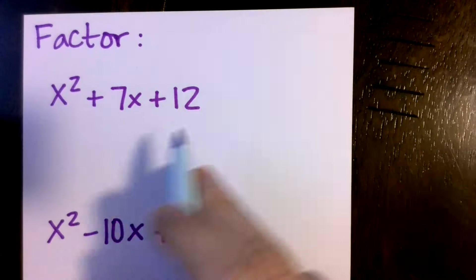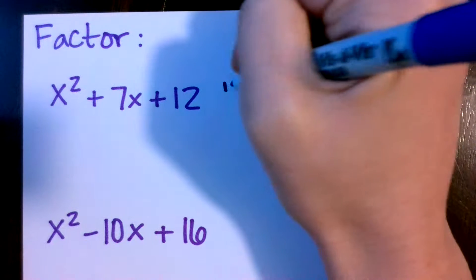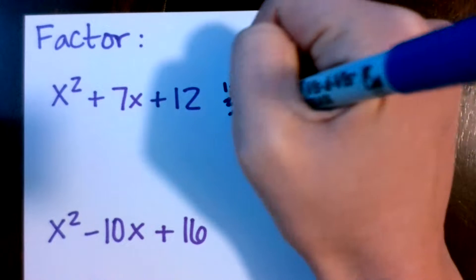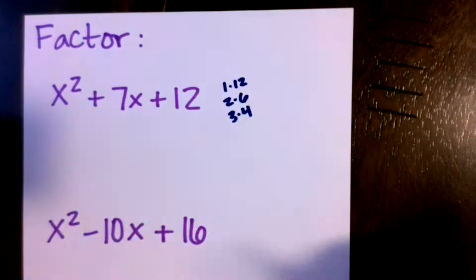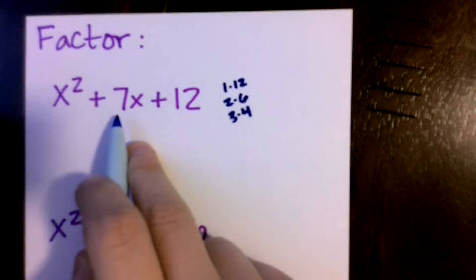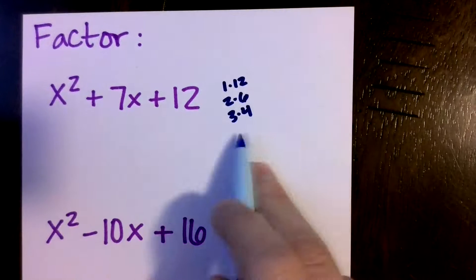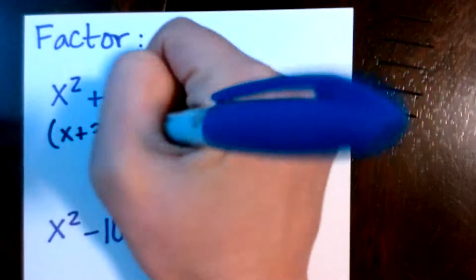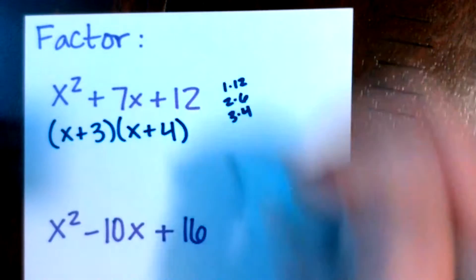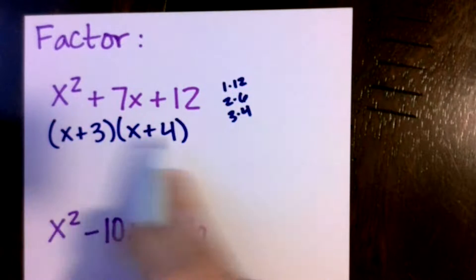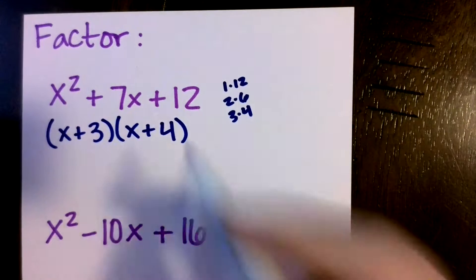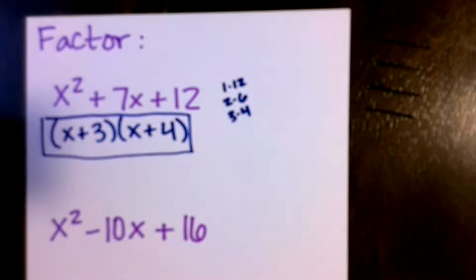If you don't think of it right away, start going through all of the factors of 12. So we've got 1 and 12, 2 and 6, 3 and 4. And then think about, of those factors, which ones would add to be 7? And of course, 3 and 4 add to be 7. So we've got an x plus 3, x plus 4. If I did multiply them back out, I would end up with what I started with. So this is the factored form of that quadratic.